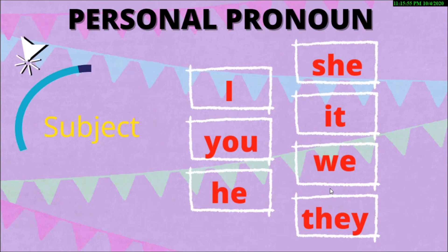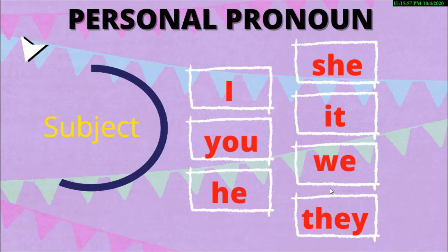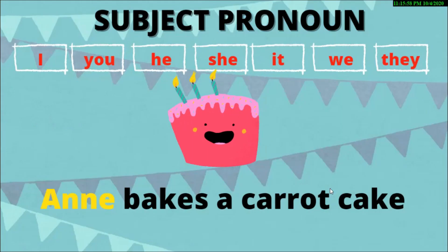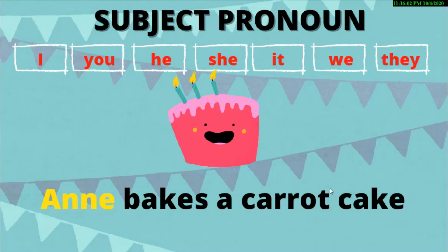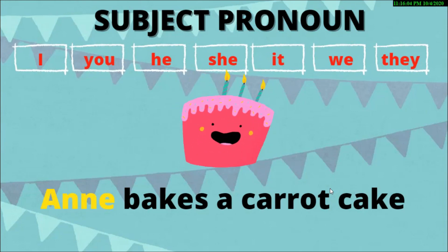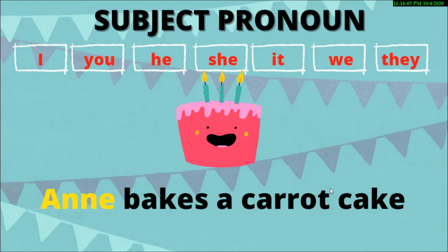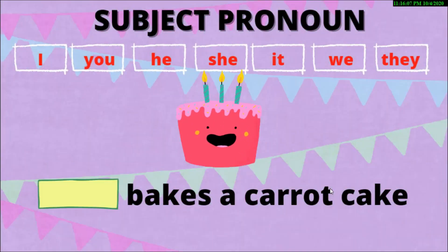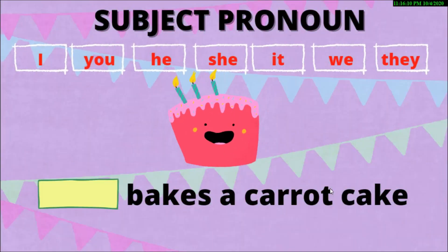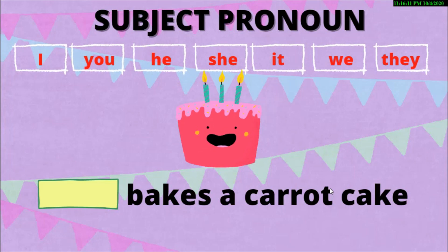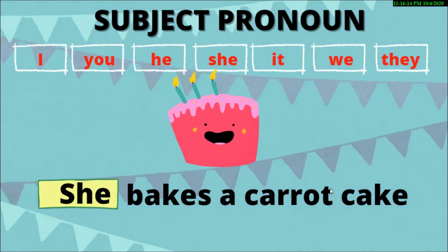For example, this sentence: Nan makes a carrot cake. Nan is a noun, and more specifically a proper noun. What should we replace Nan with? Nan is a girl, so we are going to replace it with 'she.' She bakes a carrot cake.